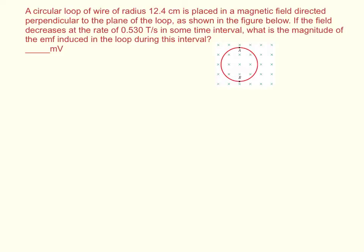If the field decreases at a rate of 0.53 tesla per second in some time interval, what is the magnitude of the EMF induced in the loop during this time interval?